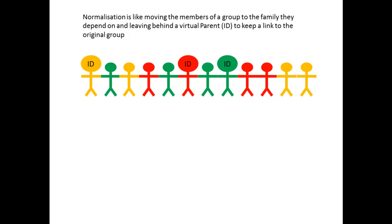Let's imagine that this table is this group of people here. Within this group of people we see the orange people, the red people, and the green people. Each group has its own parent that we labeled as ID.